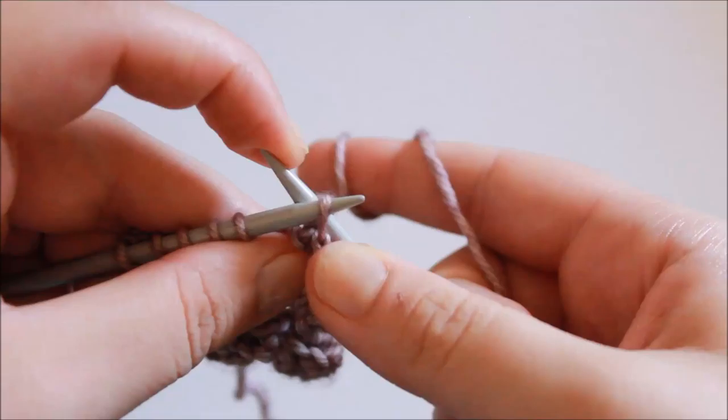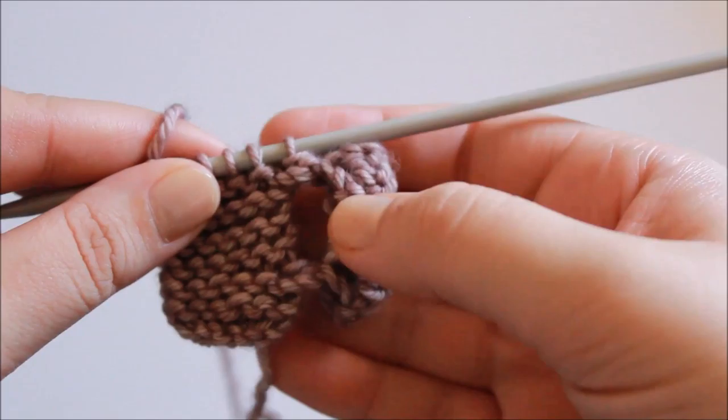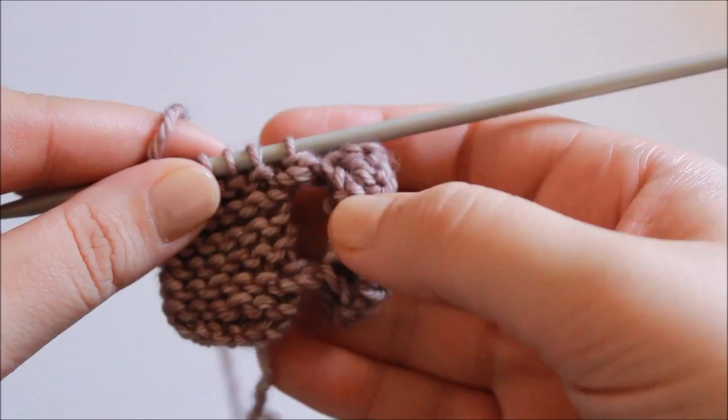And there I've bound off two stitches. If I quickly knit to the end of my trim, you'll see I have a bubble hanging off the edge of my work, and that's how you make a knitted on bubble border.